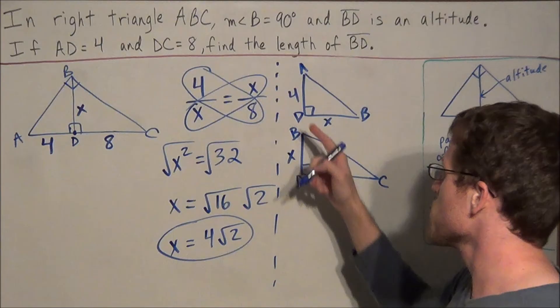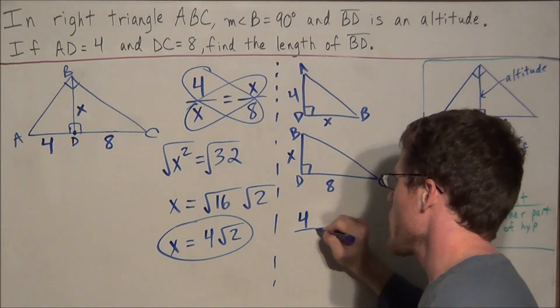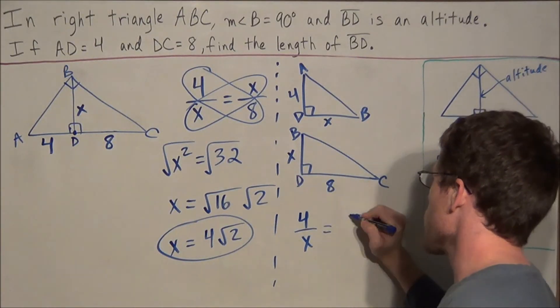So this would represent triangle ADB, and this would represent triangle BDC. So now when we set up the proportion, we would be comparing the left side to the bottom side, 4 over X, and we would be setting that equal to X over 8.